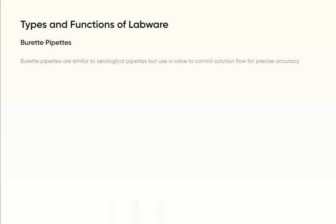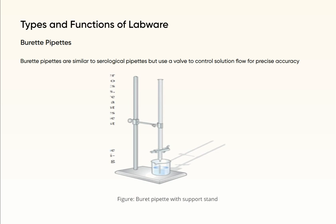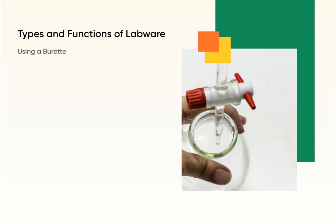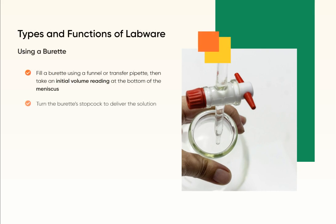Burette pipettes are similar to serological pipettes but use a valve to control solution flow for precise accuracy. To use a burette, fill it using a funnel or transfer pipette, then take an initial volume reading at the bottom of the meniscus. Turn the burette's stopcock to deliver the solution and slow the flow in the final milliliters.